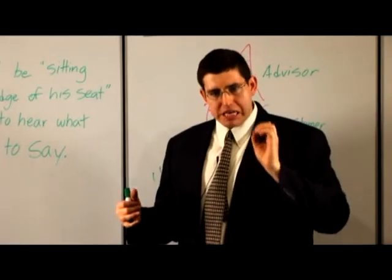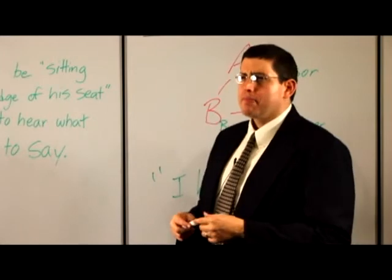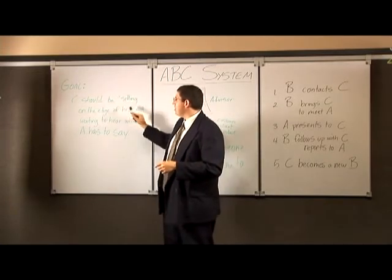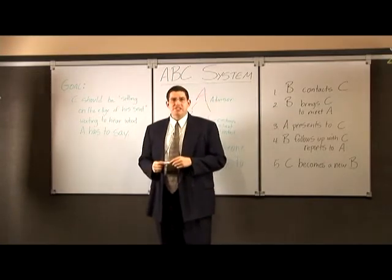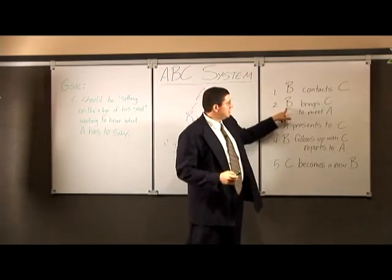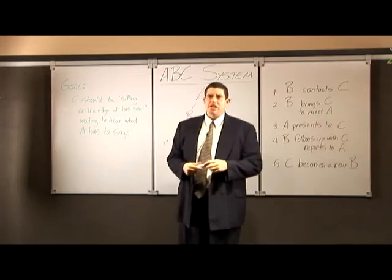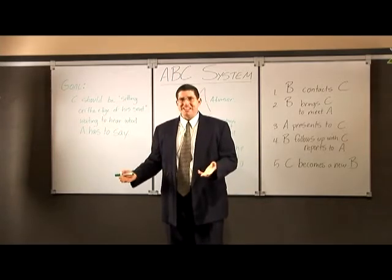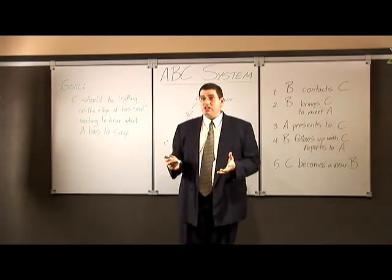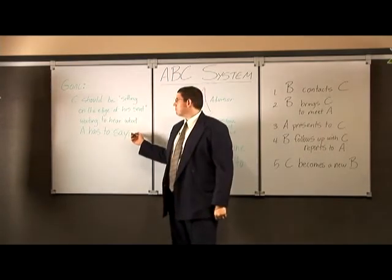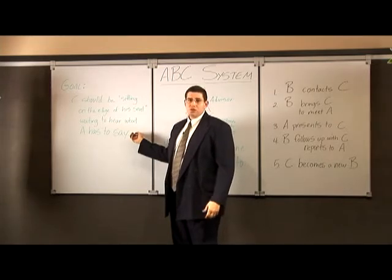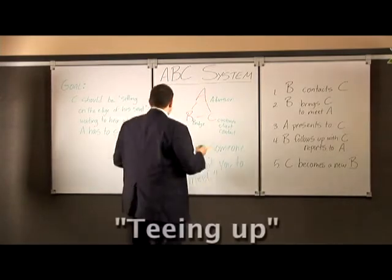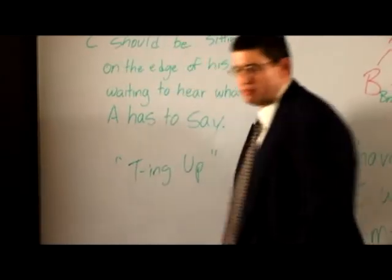Here's your goal. If you're an effective B, you create the atmosphere. You create the excitement that C has when they sit down to listen with A. So your goal is C should be sitting on the edge of his or her seat, waiting to hear what A has to say. When you bring C to meet A, it's not something that's deceptive. It's not where you say, well, come over for a bite to eat. And they get there and not only do they have donuts, they have a flip chart presentation with it. It's not something like that. It's up front. It's honest. You treat people with integrity, but you build some excitement here. So C should be sitting on the edge of his seat, waiting to hear what A has to say. If you can create that kind of environment, you're effectively what we call teeing up.